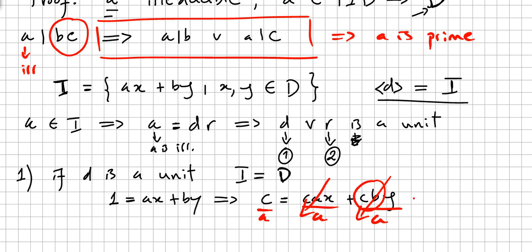So the conclusion for case one: if d is a unit, since A divides both terms on the right-hand side, A divides C.